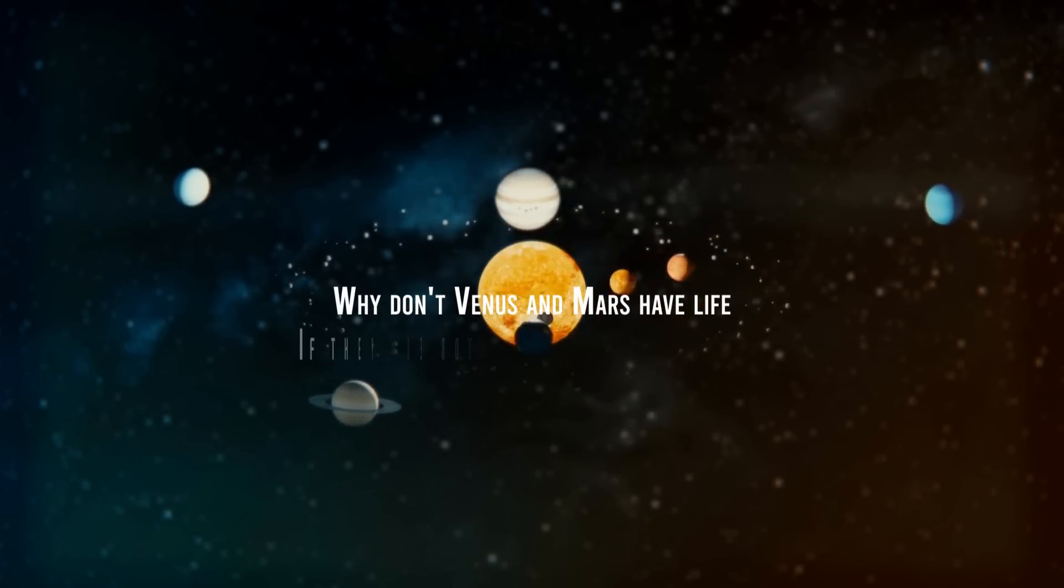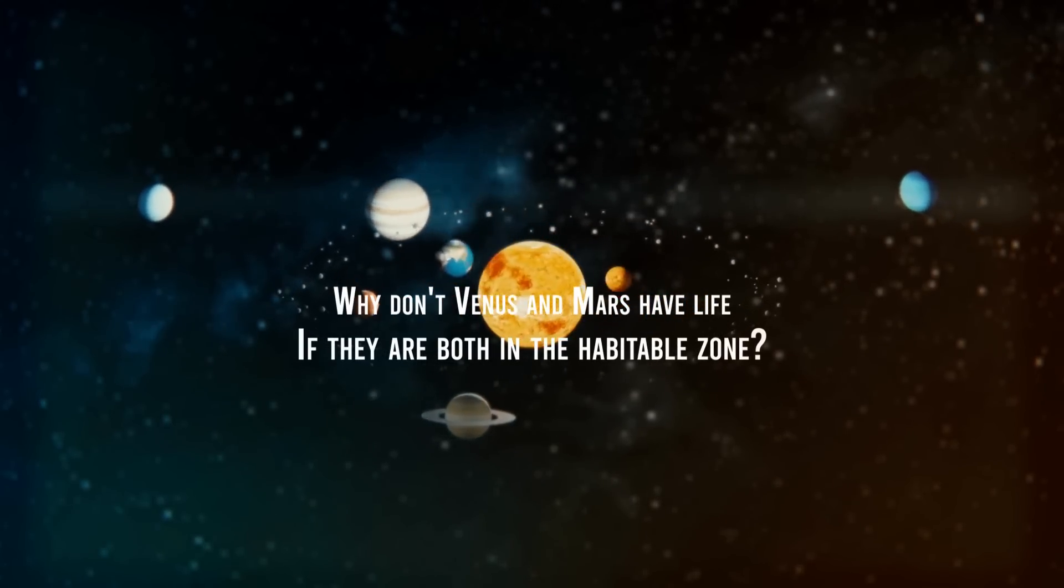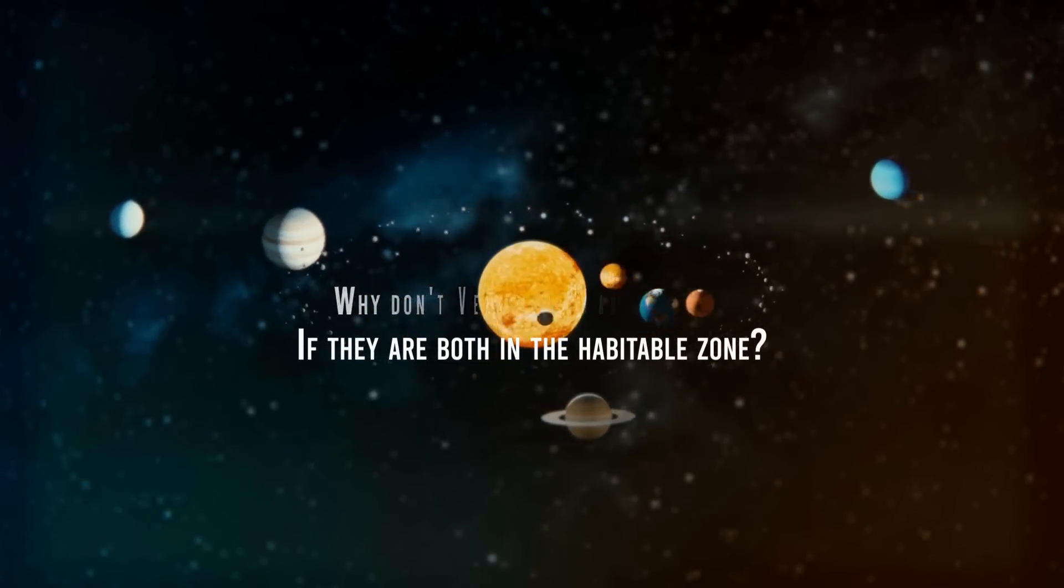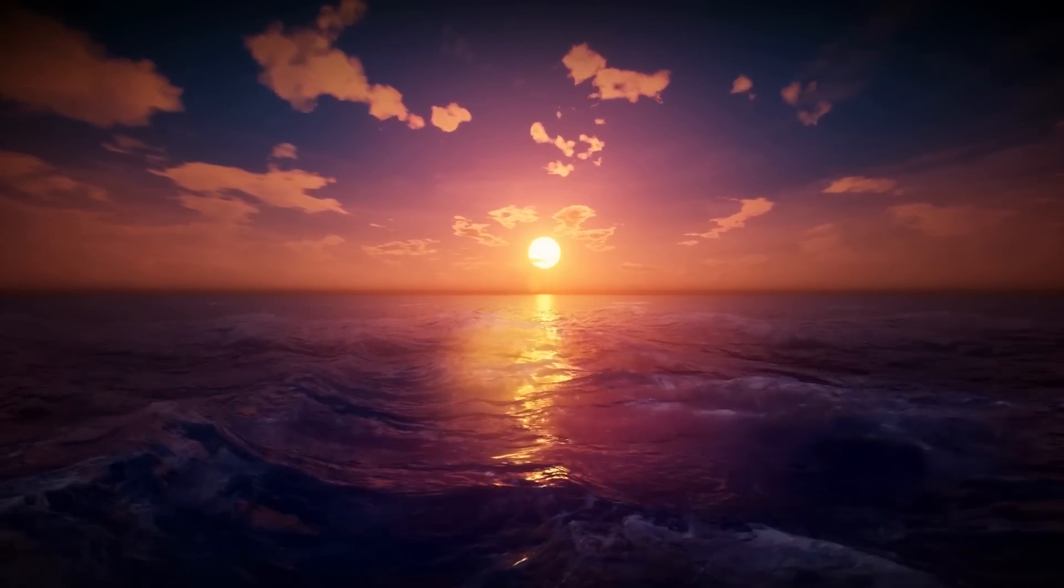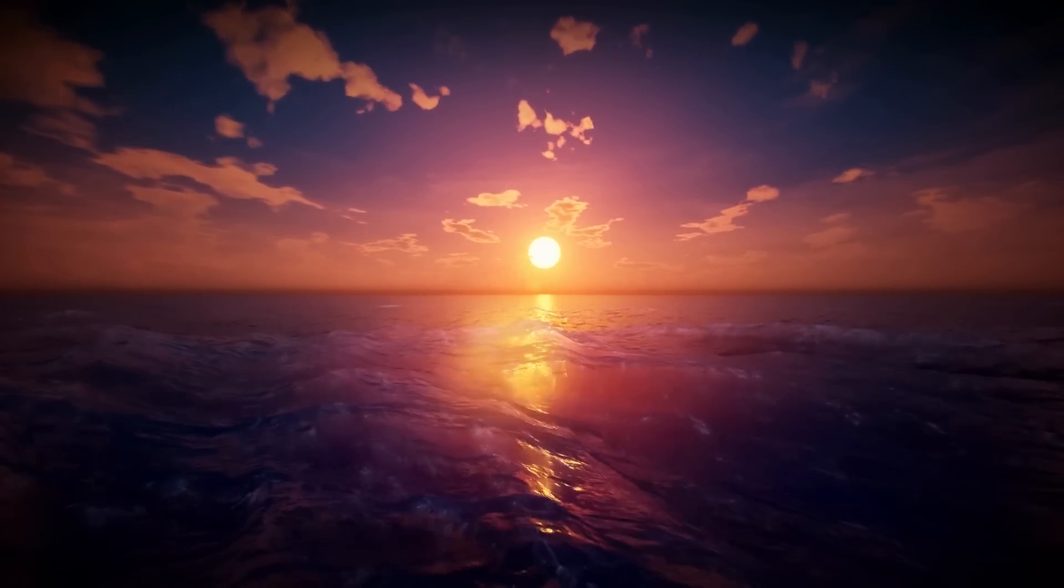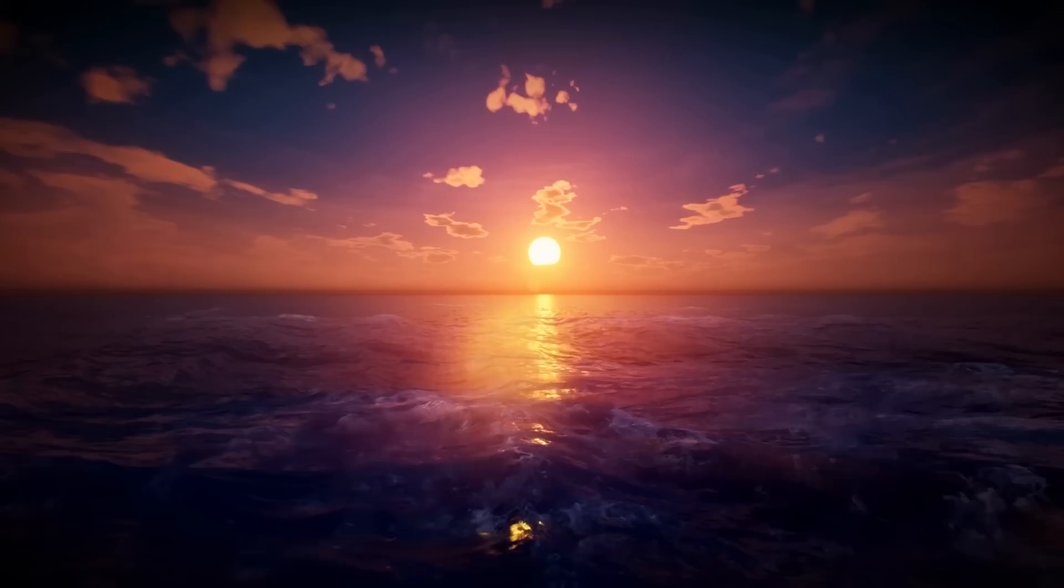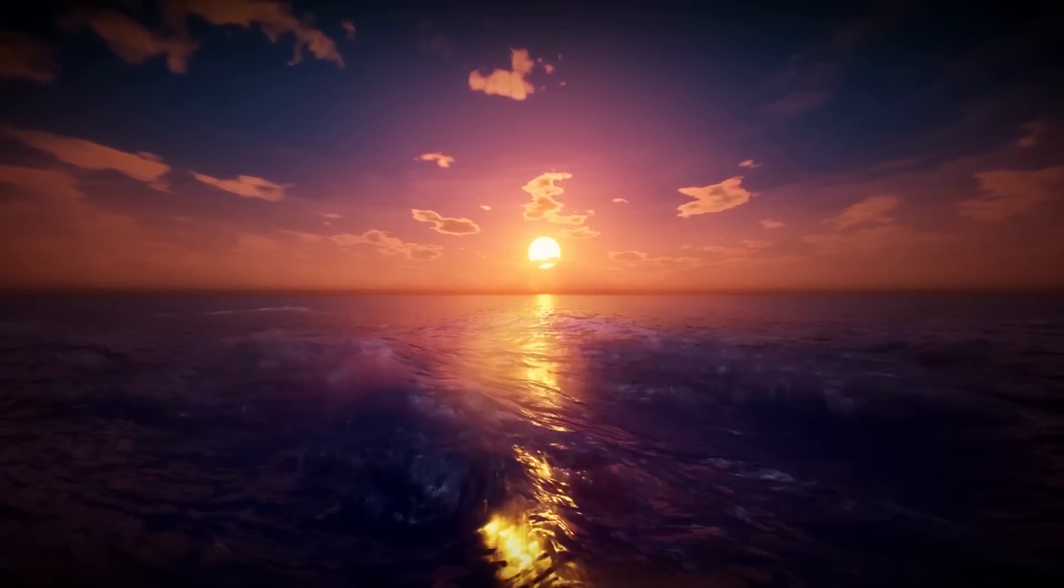Why don't Venus and Mars have life if they are both in the habitable zone? The habitable zone is a region of the solar system where temperatures allow liquid water to exist on a planet, that is, a region that is neither too hot nor too cold.